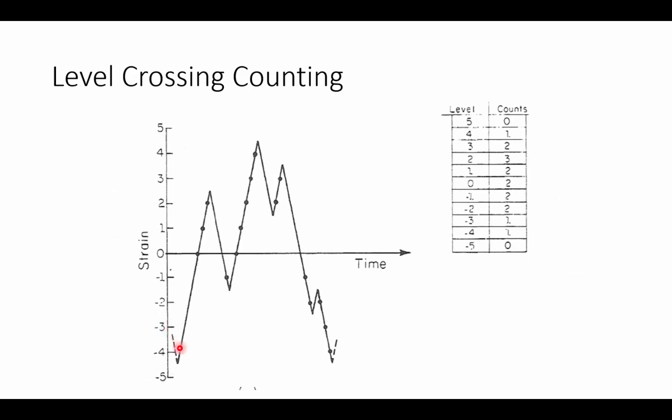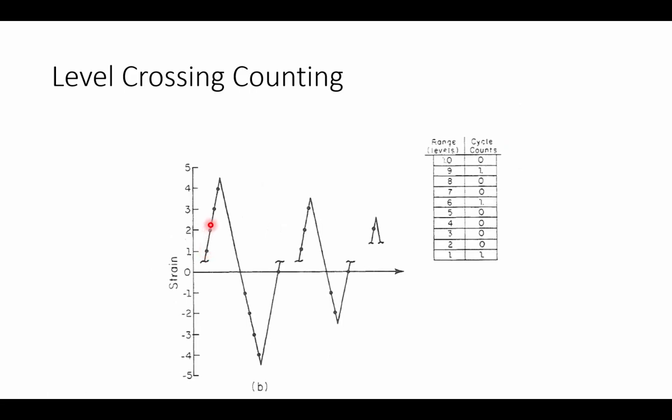Here, we have some random variable amplitude data. And what we do is we set levels of strain. And as we cross those levels, we take a count. And once we've processed all of our counts into a table, we can then sort and add those counts up in order to produce full cycles.